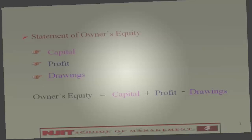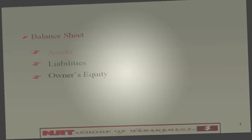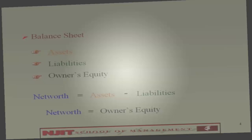The third type of report is the balance sheet. The balance sheet shows assets, liabilities, and owner's equity. The famous accounting formula is: net worth of a company equals assets less liabilities. Net worth always equals owner's equity.